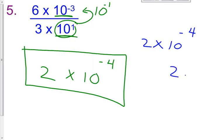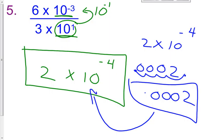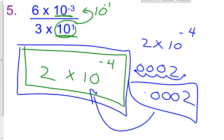2 times 10 to the negative fourth tells us this number is very, very small. If the decimal point starts here and I move it four digits to the left, I arrive at the standard notation: 0.0002. The negative exponent in scientific notation tells us a lot — whether the number is very large or very small. It is okay to have a negative exponent only in scientific notation; it is not proper in any other context.